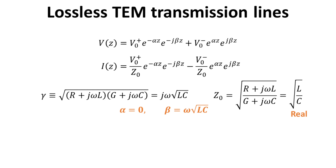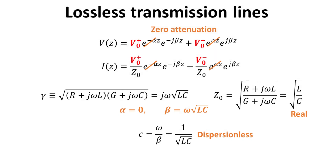In what follows, we shall focus our attention on the lossless TEM transmission lines, where R and G are negligible compared to the impedance of L and C. Hence, the attenuation exponential factor in the general solution for the voltage and current drops off. The characteristic impedance Z0 is real in this case, and these waves travel at a constant speed. We shall focus on determining the remaining two unknowns, namely the amplitudes V0-plus and V0-minus.